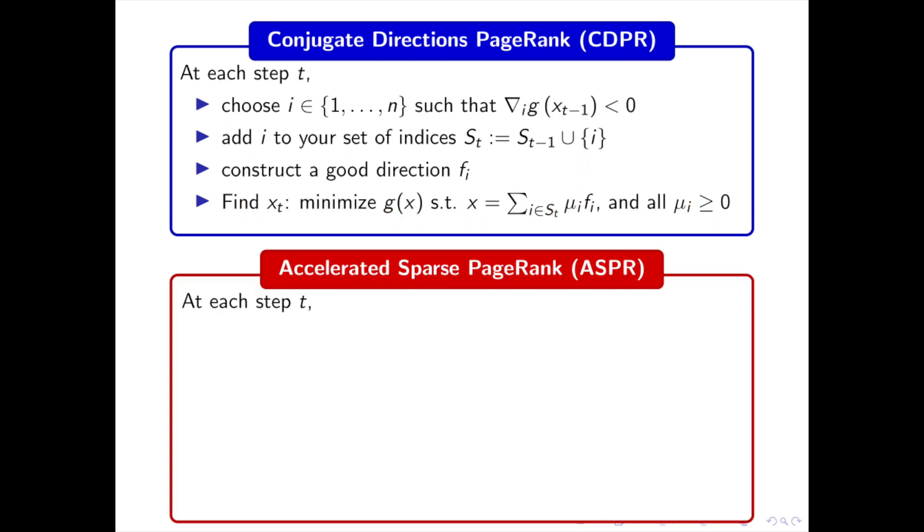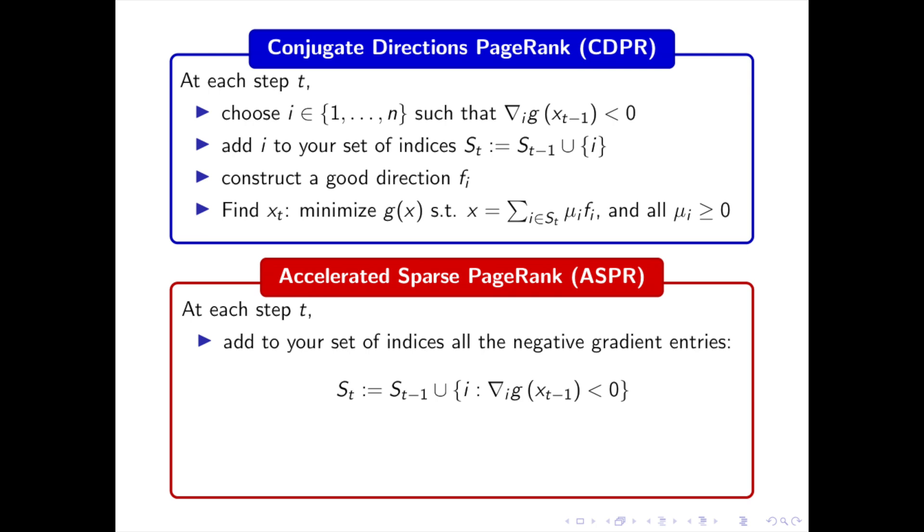Now from an optimization perspective, it is difficult to find a good direction to optimize along at every step. So instead of constructing one good direction f_j at each step, we simply add to S_t all the indices j such that the j-th entry of the gradient of G is negative. And we optimize G of the sum for i in S_t of λ_i f_i using an accelerated projected gradient descent presented earlier in this video. Finally, we retract a tiny bit such that, like in CDPR, we remain below the true minimizer and increase step by step toward it. This algorithm is called accelerated sparse PageRank, ASPR, and solves the conjecture.